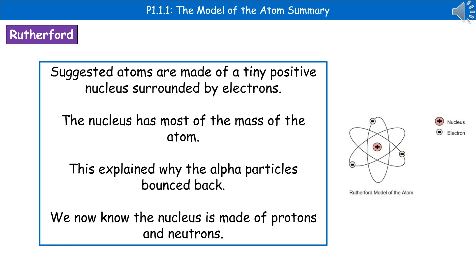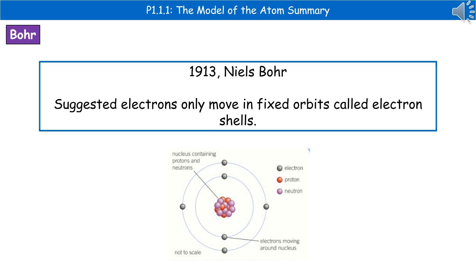Since the time of Rutherford, we now know that the nucleus is made of protons and neutrons, but he didn't know that at the time. The last scientist we need to think about is Niels Bohr, whose work was carried out in 1913. He suggested that the electrons move in fixed orbits called electron shells. This gives us the model of the atom we're still using today: a positive nucleus in the centre — Rutherford's contribution — with electrons in fixed orbits called electron shells going around the nucleus, which is Bohr's contribution.